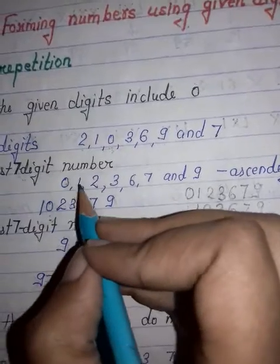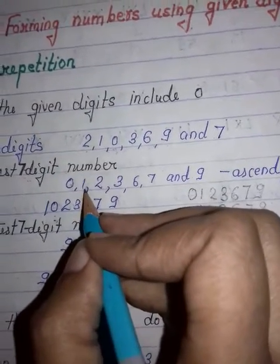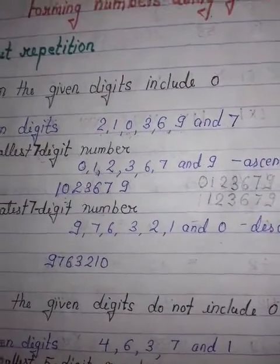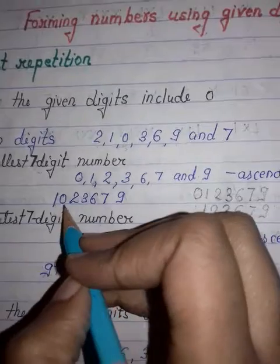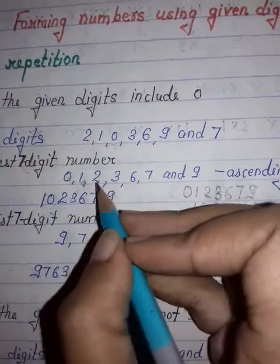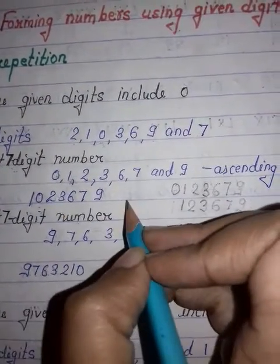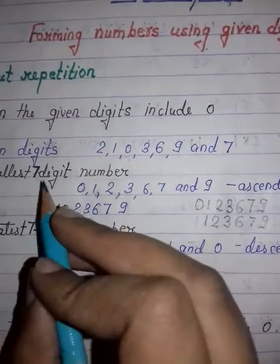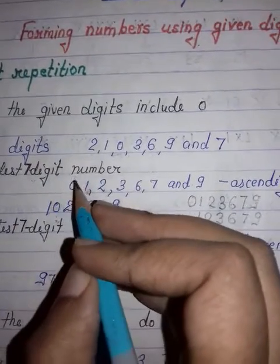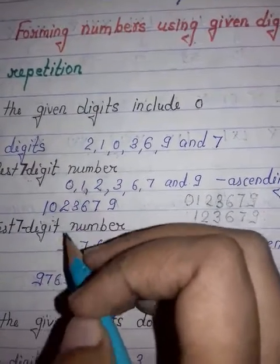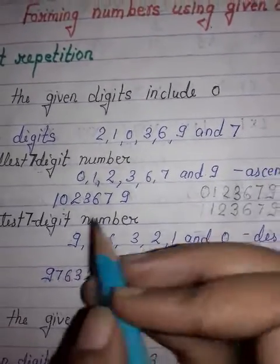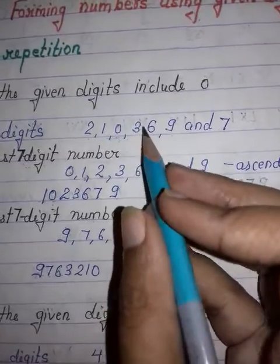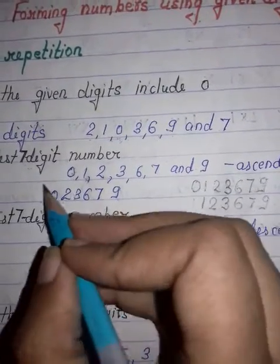You will start the number with the digit next to zero in ascending order. So you will start your smallest number with 1. After 1, you will write 0, and after that, the rest of the digits in ascending order. You have to pay attention that you cannot start the number with a zero. This is the seven-digit smallest number.